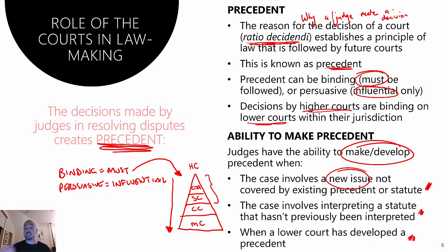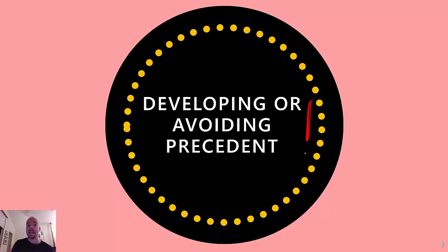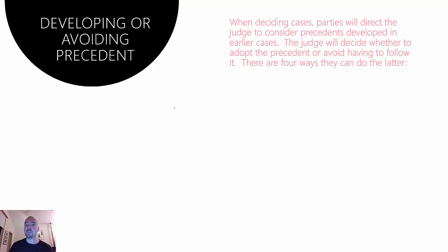There's a key word — 'develop' — when a lower court has made a decision, the higher court then, either on appeal or in a future case, gets to review that interpretation of a statute or that decision and the ratio decidendi, and then potentially make a different decision. Developing or avoiding precedent is important because it's now listed in the study design that we understand this concept of avoiding precedent, because this is one of the ways that judges are able to make law even when maybe it appears that they can't.